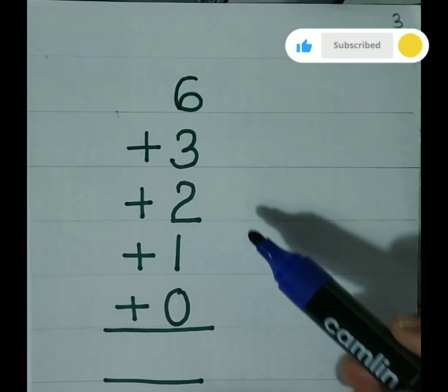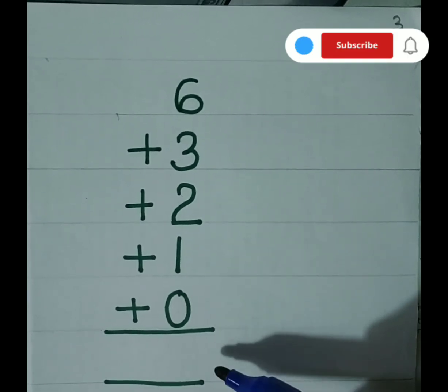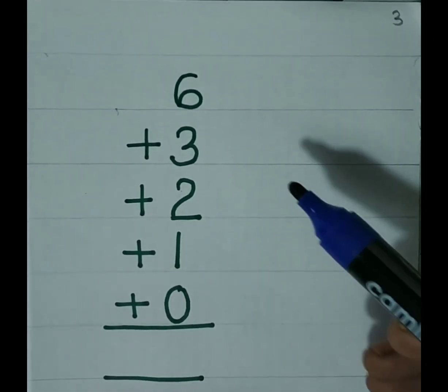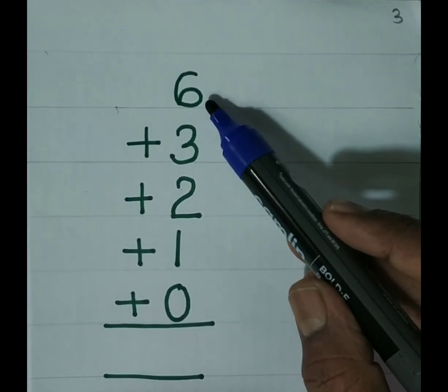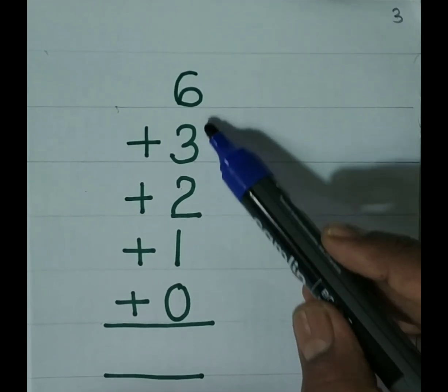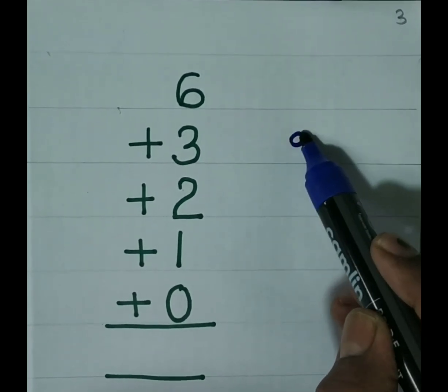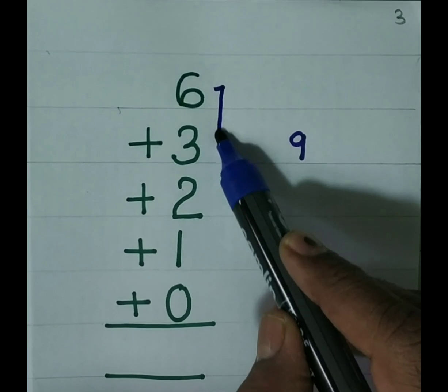You may get sums like this also. All one digit numbers. So we have to start from the first number. 6 plus 3. 6 plus 3 will give us 9. So 9 you have to keep in mind.